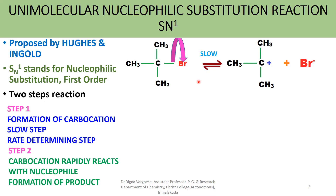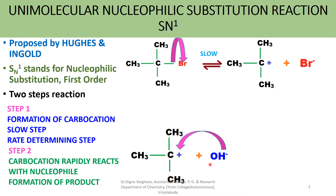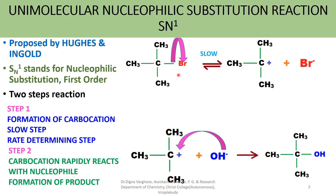The second step is in which the carbocation rapidly reacts with the nucleophile and forms the product — it is the product forming step. In step 2, the carbocation reacts with the nucleophile, forming the product, which here is an alcohol. So in nucleophilic substitution reaction through SN1 mechanism, step 1 involves carbocation formation and step 2 involves the carbocation rapidly reacting with the nucleophile to form the product.